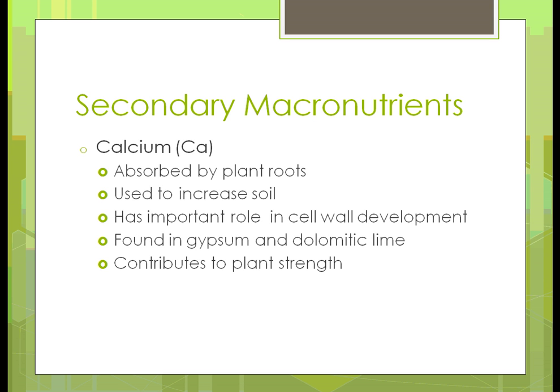Calcium is absorbed by the plant roots. It increases the soil biota and has an important role in the development of the cell wall. A lot of farmers put lime in to change the pH and raise it. You can also put gypsum — which is what's in drywall used in houses — and it reduces the amount of salts in a soil while also breaking apart clay and making it more permeable. Through that whole process, putting gypsum or lime will help with plant strength, as long as you don't get too much.